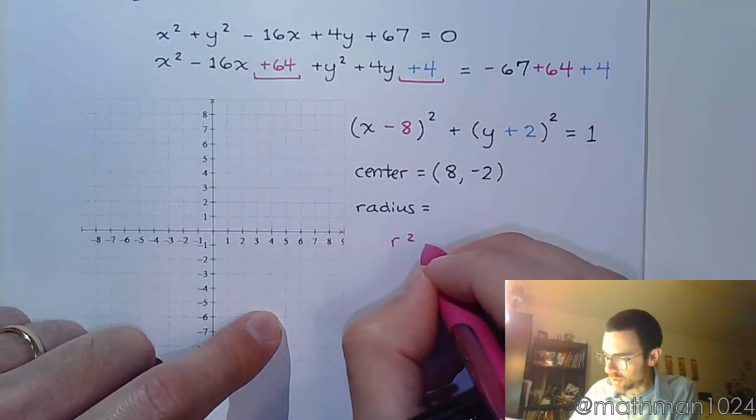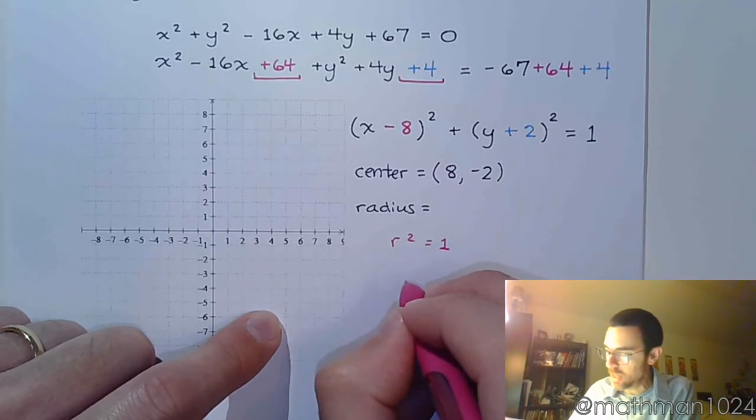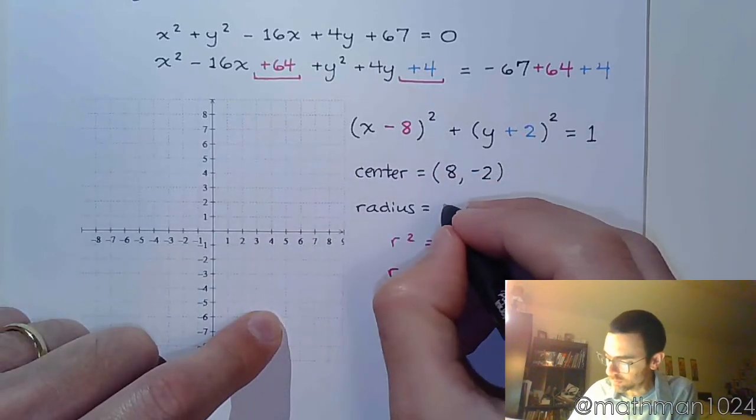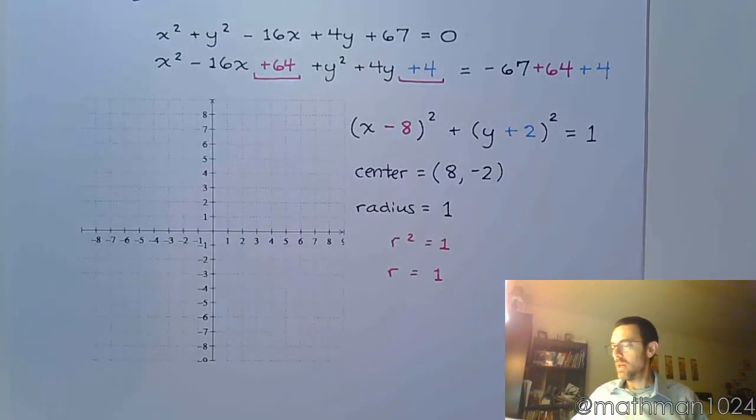And my radius. So according to this, r squared is 1, which means r is, well, the square root of 1 is 1.